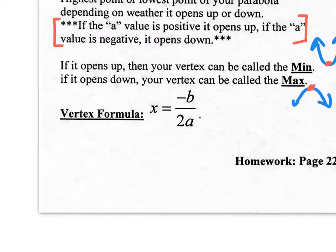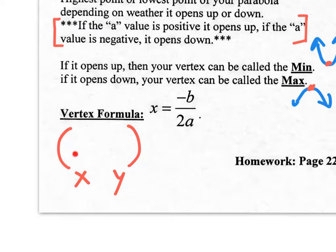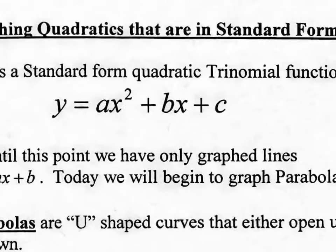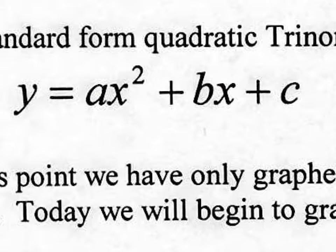Notice that the formula says X equals — so this only gives you the X value of the vertex. Once you have the X value, you plug it back into the original equation to solve for Y. For example, if B is 4 and A is 1, it would be negative 4 over 2 times 1, and you work that out to get your X value.